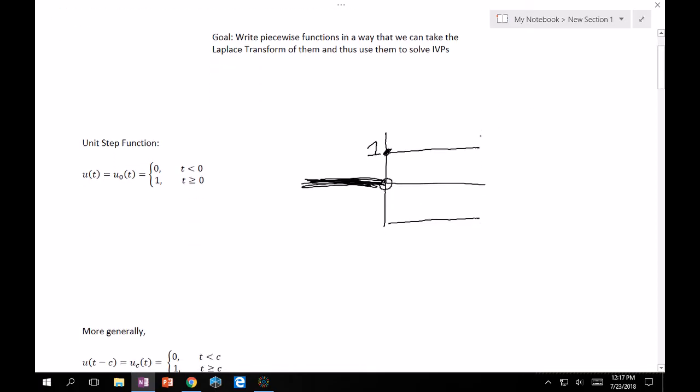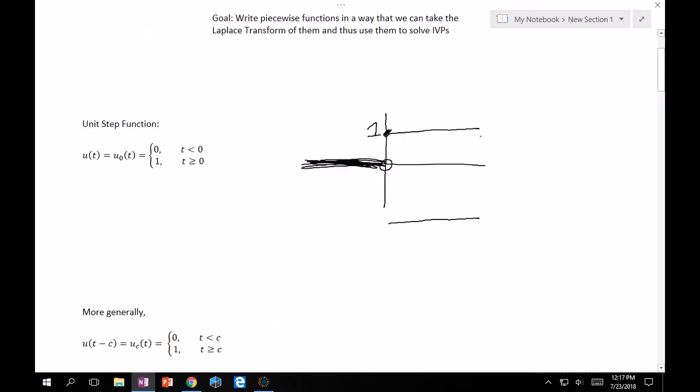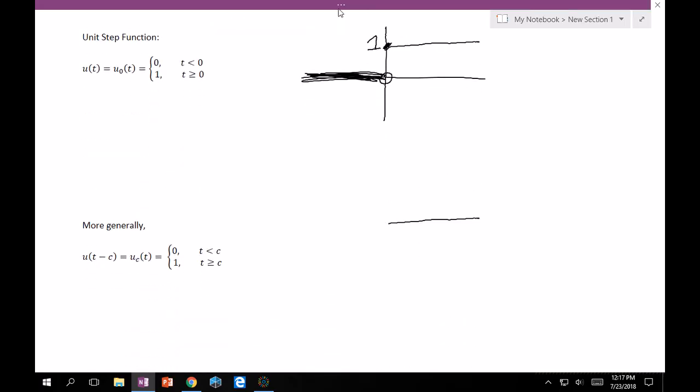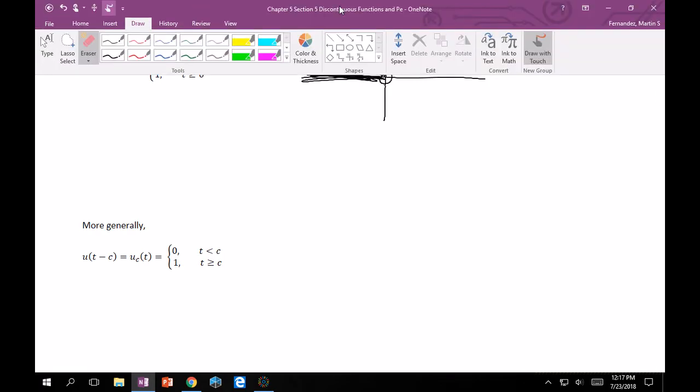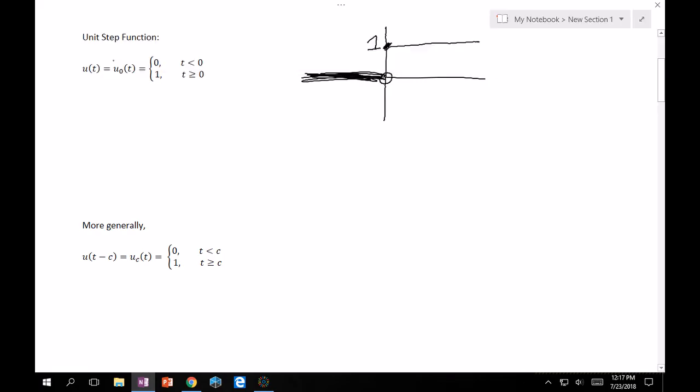So, what's the next logical step? Let's look at the shifted version. u of t minus c, which is how classes beyond this typically write it. And then for the textbook in here, it usually says u subscript c of t. And it's pretty much the same thing except now instead of t equals 0, it's any arbitrary number that you want c where it gets turned on.